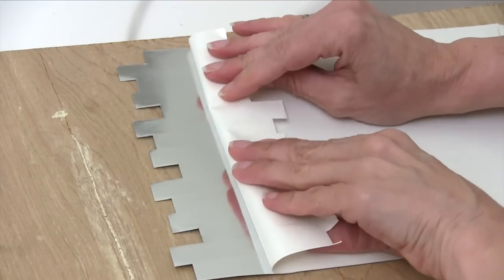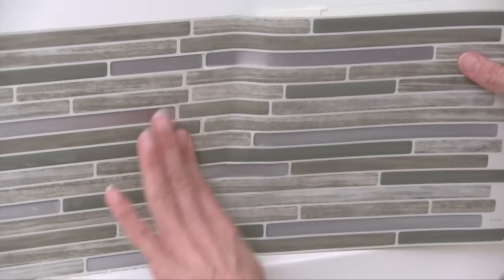I repeated the process with the next tile, again lining up the top of the tile with the line and adjusting it until the joint was seamless.